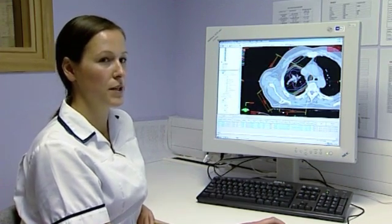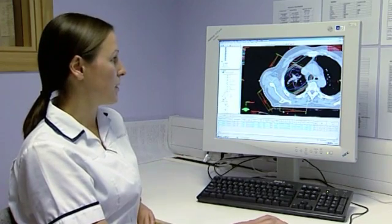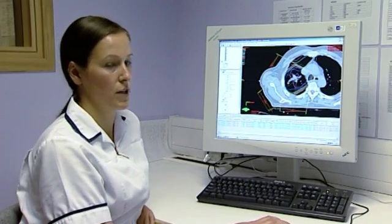So now we know that the dose covers, we need to review the doses to the organs at risk. This is done by producing a dose volume histogram, a DVH.